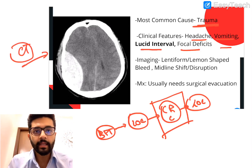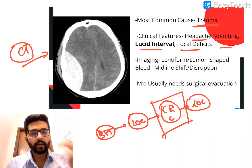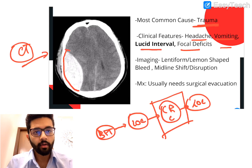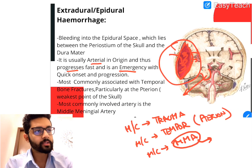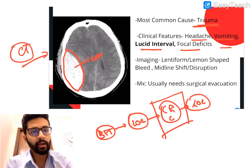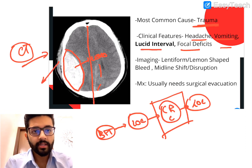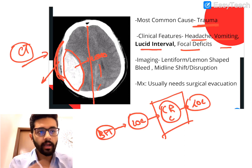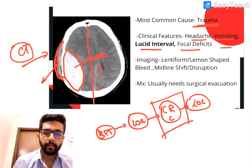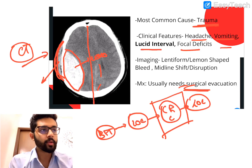On CT imaging of EDH, you see three things: firstly a hyperdense white area forming a classical lens shape or lemon shape; secondly there can be a midline shift; and thirdly you can sometimes see soft tissue injury on the outside suggesting trauma. Management — since this is an arterial bleed with rapid progression that can compress brain tissue and lead to herniation — it usually needs emergency surgical evacuation.